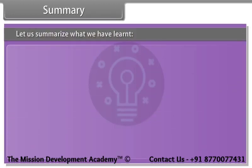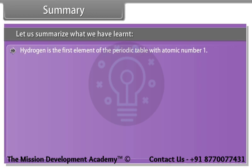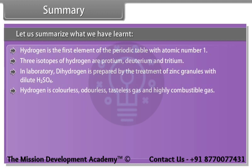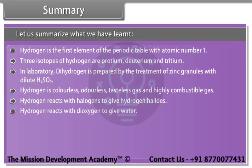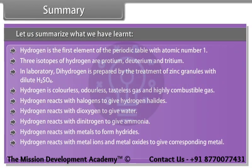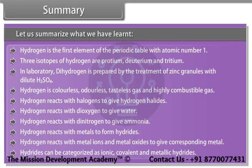Let us summarize what we have learned. Hydrogen is the first element of the periodic table with atomic number 1. The three isotopes of hydrogen are Protium, Deuterium, and Tritium. In the laboratory, dihydrogen is prepared by the treatment of zinc granules with dilute sulphuric acid. Hydrogen is a colourless, odourless, tasteless, and highly combustible gas. Hydrogen reacts with halogens to give hydrogen halides, with dioxygen to give water, with dinitrogen to give ammonia, and with metals to form hydrides. Hydrogen also reacts with metal ions and metal oxides to give the corresponding metal. Hydrides are categorized as ionic, covalent, and metallic hydrides.